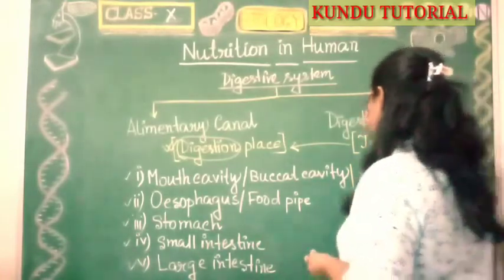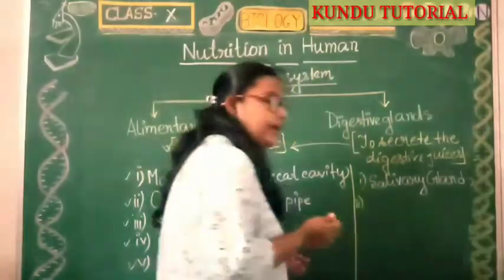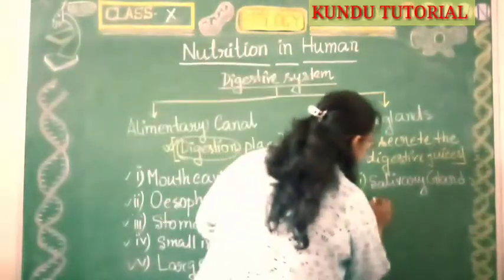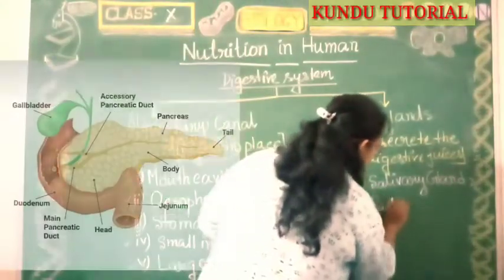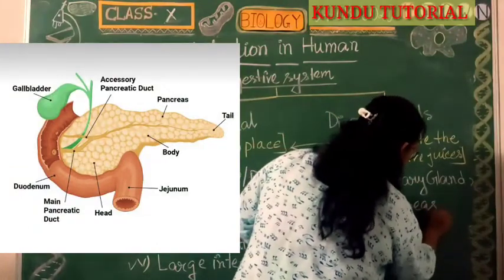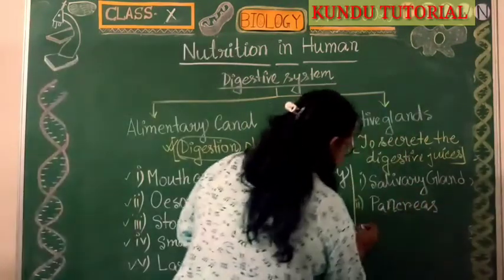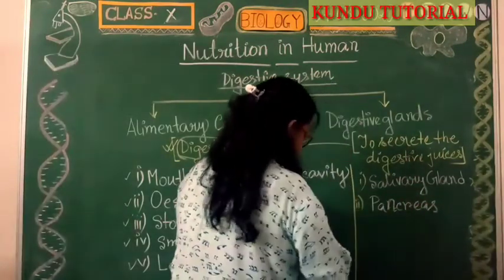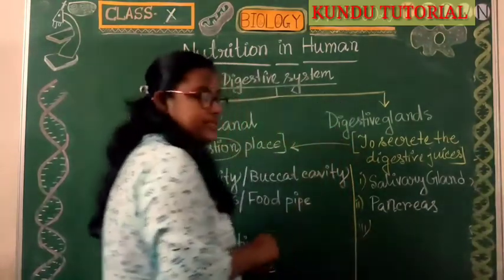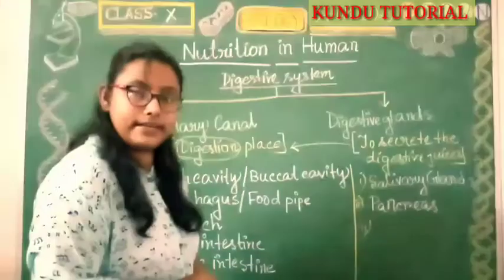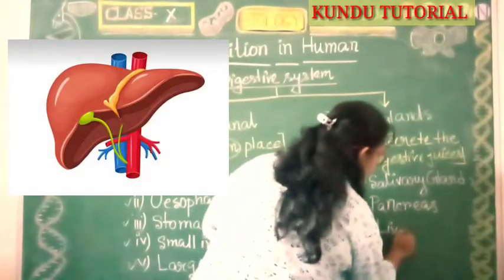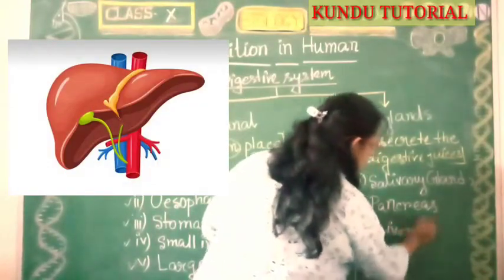The next digestive gland — also called an accessory gland — is the pancreas. The third digestive gland is the liver.